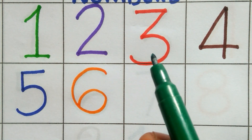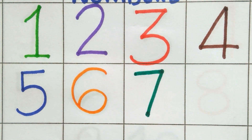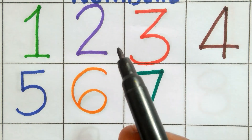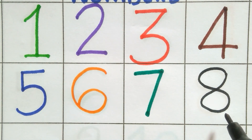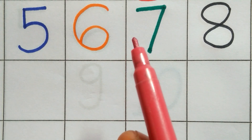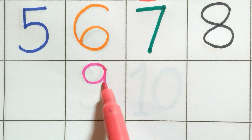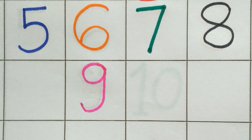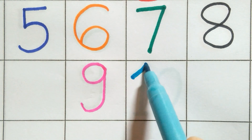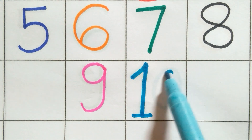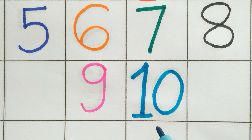Deep green color. Seven. Seven. Black color. Eight. Eight. Pink color. Nine. Nine. Light blue color. One zero. Ten. Ten. Thanks for watching.